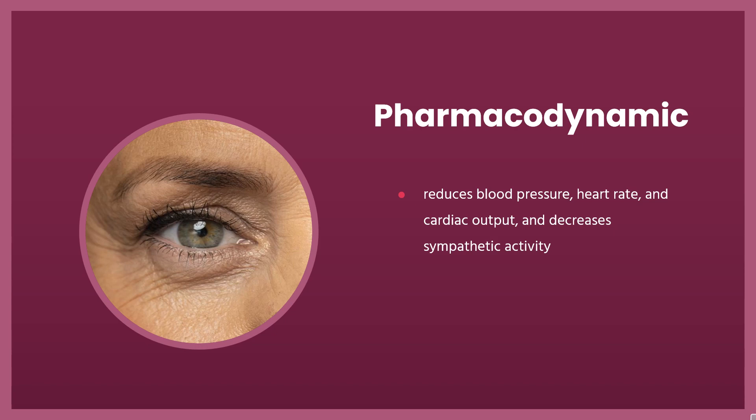When administered by the ophthalmic route, Timolol rapidly reduces intraocular pressure. When administered in tablet form, it reduces blood pressure, heart rate, and cardiac output, and decreases sympathetic activity. This drug has a fast onset of action, usually occurring within 20 minutes of the administration of an ophthalmic dose. Timolol maleate can exert pharmacological actions for as long as 24 hours if given in the 0.5% or 0.25% doses.